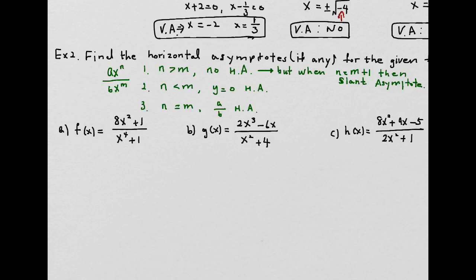Example 2a: f of x equals 8x squared plus 1 over x to the fourth plus 1. To find the horizontal asymptote, compare the exponents: numerator degree is 2, denominator degree is 4. Since the denominator exponent is larger, the horizontal asymptote is y equals 0. Example 2b: g of x equals 2x cubed minus 6x over x squared plus 4. Comparing cube with square, the numerator is larger, so there is no horizontal asymptote.